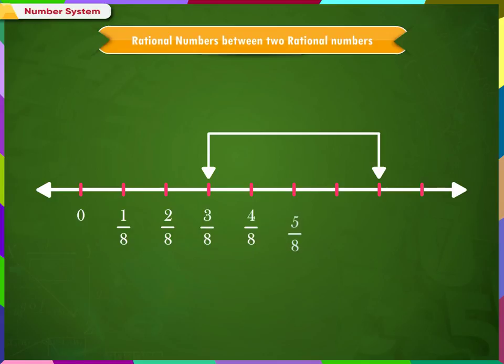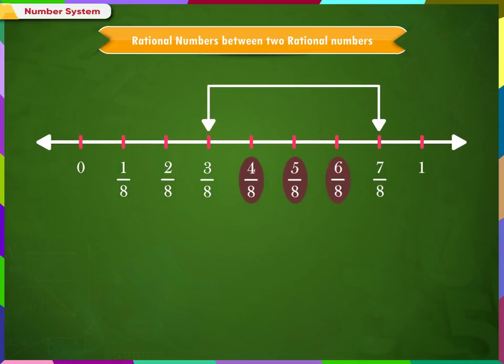3/8 and so on to 1. We may probably think that there are three rational numbers: 4/8, 5/8, and 6/8. Is our answer correct?